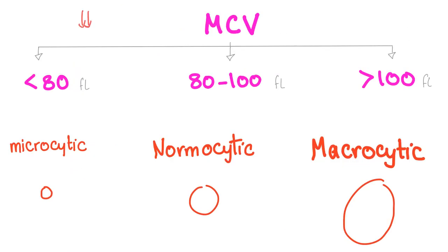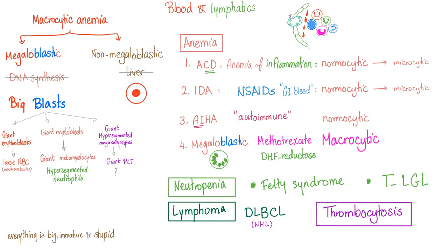Anemia is decreased red blood cell mass. Depending on the MCV — mean corpuscular volume — we divide anemias into microcytic, normocytic, and macrocytic. Macrocytic is when the MCV is greater than 100 femtoliters. When the volume is high, it means the cell is big. When you have macrocytic anemia, every cell is big, immature, and stupid — forgive my language.